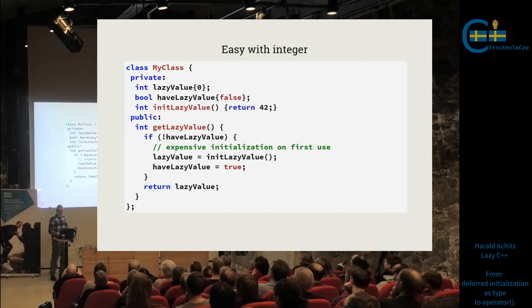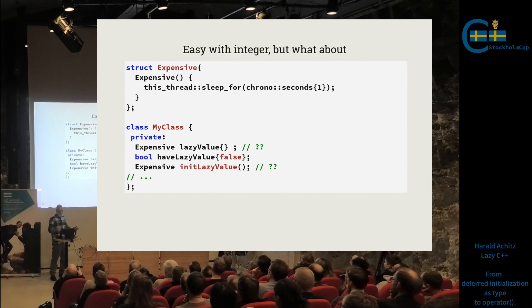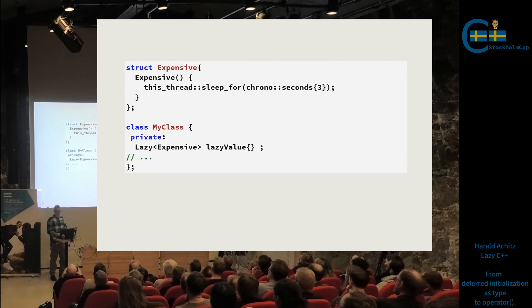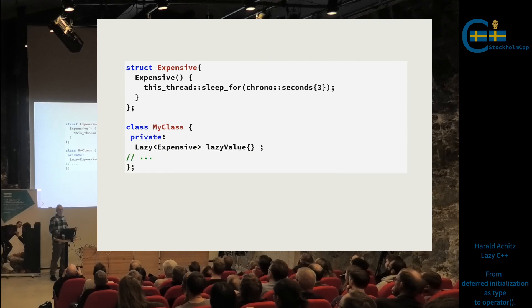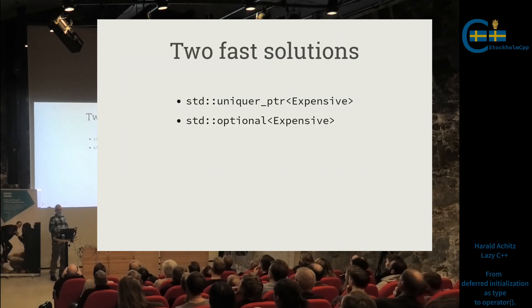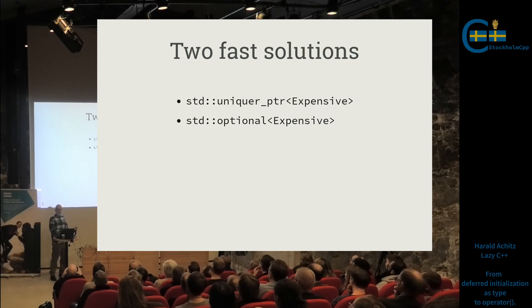The whole thing is easy with integers — I've already shown that code. But what if I have something that does something in the constructor? I need to do something, and this is why I like to model these things as a type — the details go away and you just use it. There are two fast solutions you could think about: unique pointer and optional. Anyone know what could be a problem with those? Why would you not want to use unique pointer?